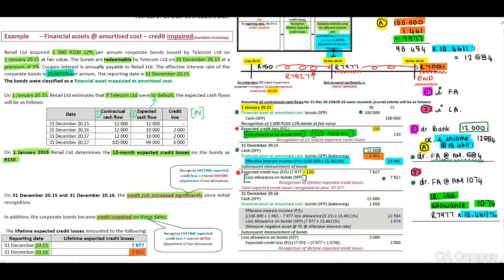Our total loss allowance should be 7,051 rand based on the lifetime expected credit losses. The total currently in our account will be 7,977 plus 1,074, so we will need to debit our loss allowance with 2,000 rand — this is the difference between what we have and what it should be, 7,051 rand. This is a very difficult example. Remember: include your timeline, include your amounts, go through your thought process step by step, and remember your interest on your loss allowance.